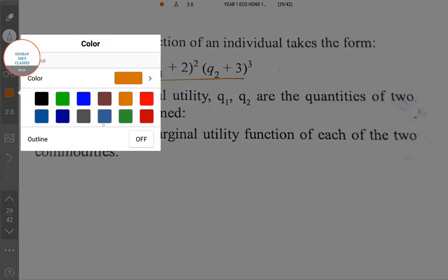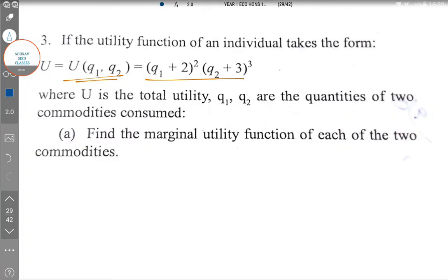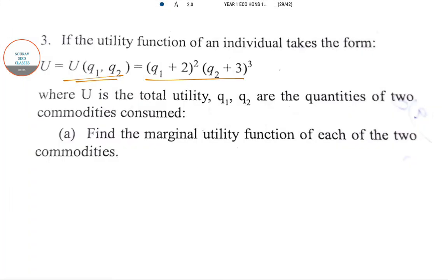So here marginal utility is nothing but the derivative of the function. Now there are two parts: ∂U/∂Q1 which is called marginal utility for product one, and ∂U/∂Q2 which is marginal utility of product number two.